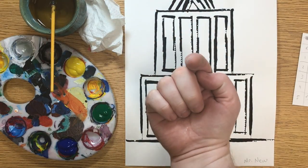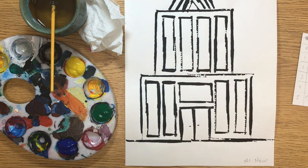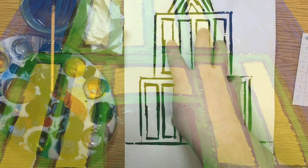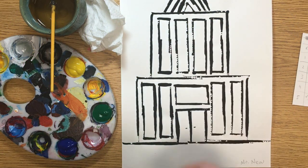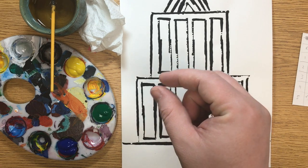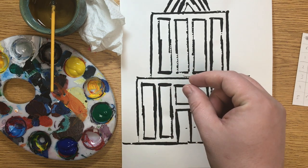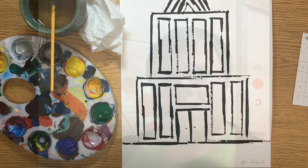Welcome back to Mr. New's art class. It's wonderful to see your smiling faces today. Today we're going to be painting our architectural designs and we're going to be using the color wheel to determine which colors we're going to use. Let's go take a look at that.